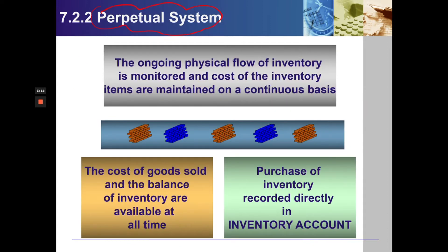Perpetual System. The ongoing physical flow of inventory is monitored. The cost of goods sold and cost of inventory is maintained on a continuous basis. The cost of goods sold and the balance of inventory are available at all times. Purchase of inventory is recorded directly in the inventory account.